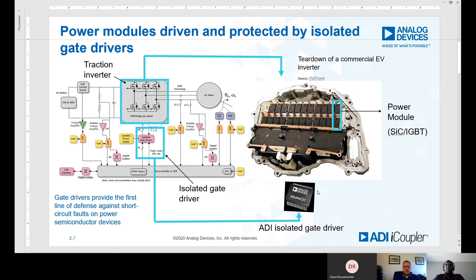The figure on the top actually shows you the teardown of a commercial EV inverter, just so you can see the power modules we are interested in protecting. When comparing different types of semiconductors like silicon carbide versus an IGBT, what are some of the differences in short-circuit withstand capabilities, and in particular, what causes a silicon carbide module to fail?